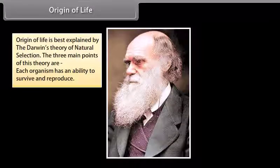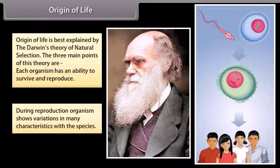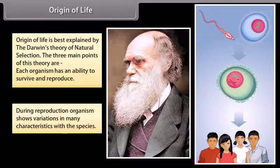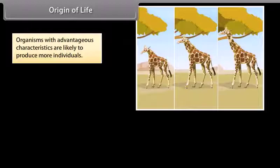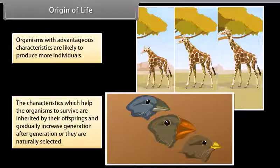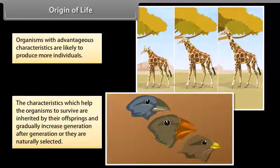Origin of Life is best explained by Darwin's theory of natural selection. The three main points of this theory are: each organism has an ability to survive and reproduce; during reproduction, organisms show variations in many characteristics with their species; organisms with advantageous characteristics are likely to produce more individuals. The characteristics which help the organisms to survive are inherited by their offspring and gradually increase generation after generation, or they are naturally selected.